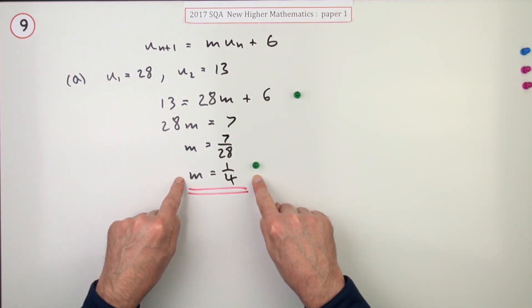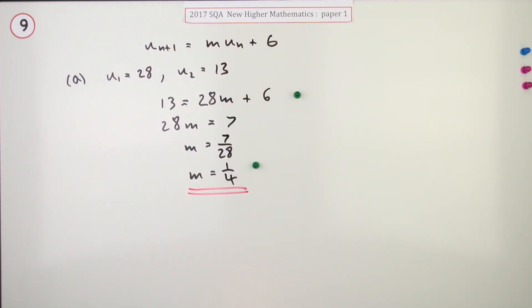If you just stated m equals a quarter without anything else, you'd only get one mark out of two.